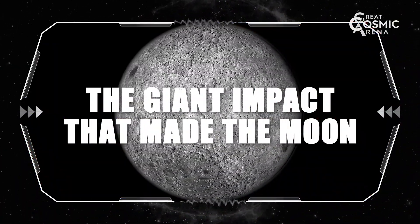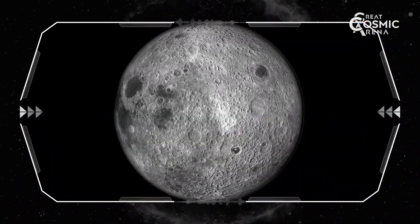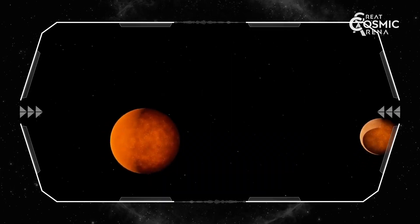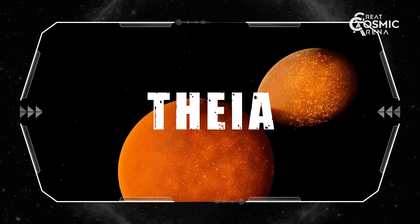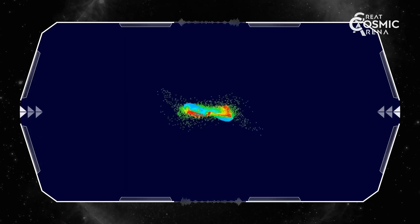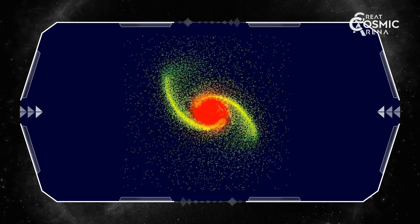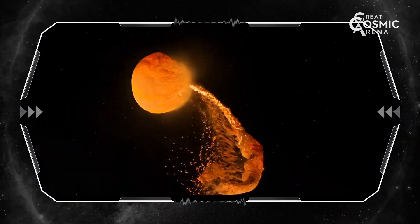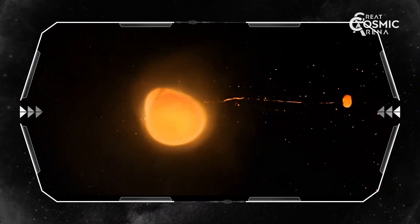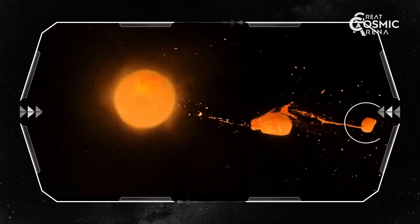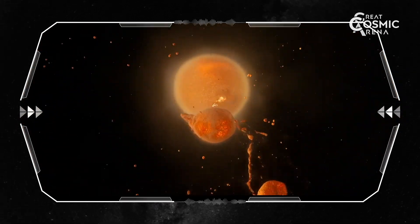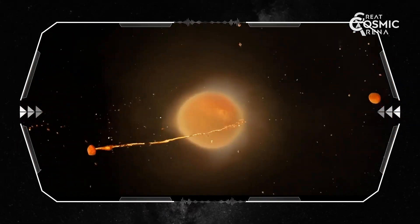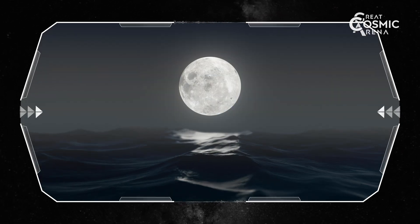The giant impact that made the moon. The leading theory suggests about 4.5 billion years ago, a Mars-sized body named Theia collided with early Earth. The impact was so intense that it vaporized Theia and a significant portion of Earth's outer layers. This debris was thrown into Earth's orbit and eventually formed the moon. So next time you look up at the night sky, remember our moon is a result of a cosmic collision from billions of years ago.